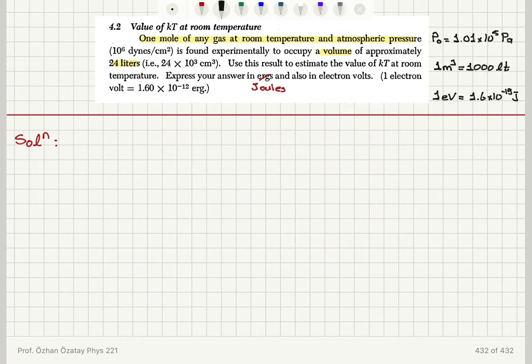So the pressure, atmospheric pressure in SI units, that is one atmosphere, is equal to 1.01 times 10 to 5 pascals. A pascal basically means a newton per meter squared. The volume is 24 liters and we know that one meter cubed is 1,000 liters. So this is 24 times 10 to minus 3 meter cubed in SI units.